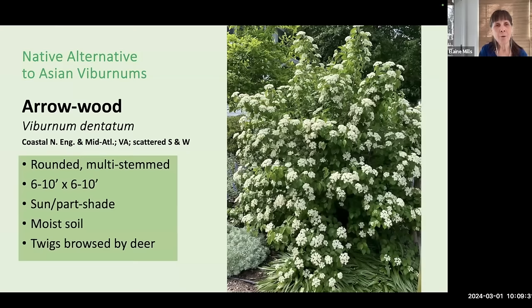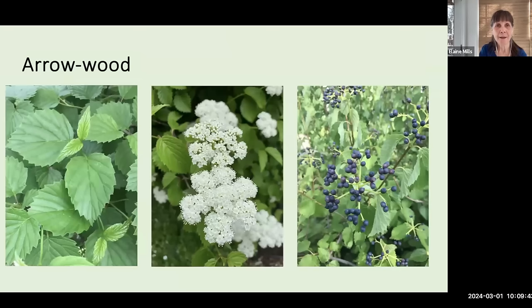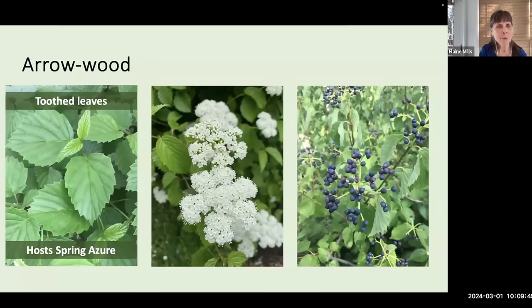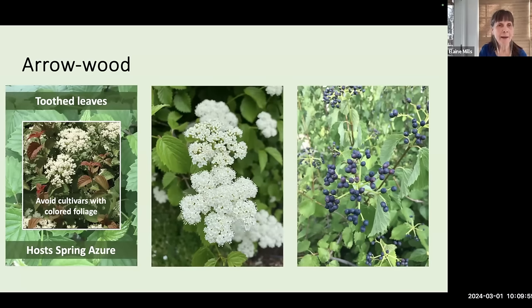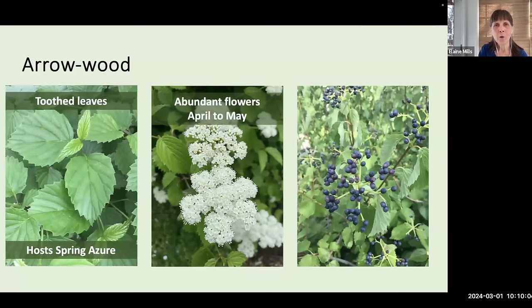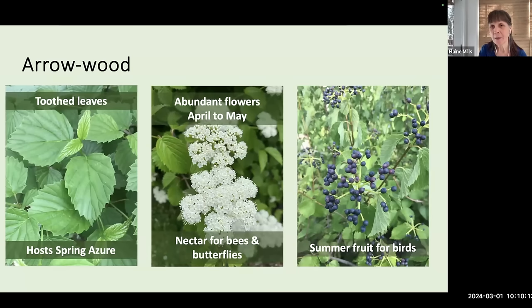Arrowwood is a rounded multi-stemmed shrub about six to ten feet in height that grows in sun to part shade and moist soil. It makes wonderful use in shrub borders as a screen or backdrop. Arrowwood has toothed leaves — as suggested by its species name — which provide nourishment for the spring azure butterfly. Avoid cultivars with bright colored foliage as they won't offer that support. It has abundant flowers from April to May, summer fruit for birds, and beautiful red-orange fall foliage.